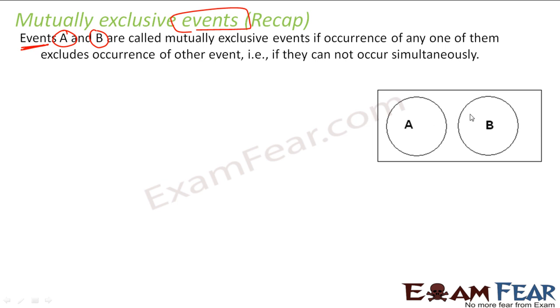For example, for throw of die, my odd outcome is event A and even outcome is event B. So if you see, my event A has values one, three, five, and event B will be two, four, six. So there is no common element between these two sets. So they are mutually exclusive sets.